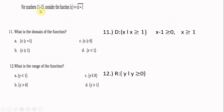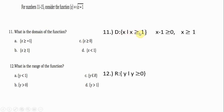For numbers 11 to 15, consider the function f(x) = √(x − 1). What is the domain of the function? The expression under the radical must not be negative, so x − 1 ≥ 0, which gives x ≥ 1. The domain is the set of x such that x is greater than or equal to 1.